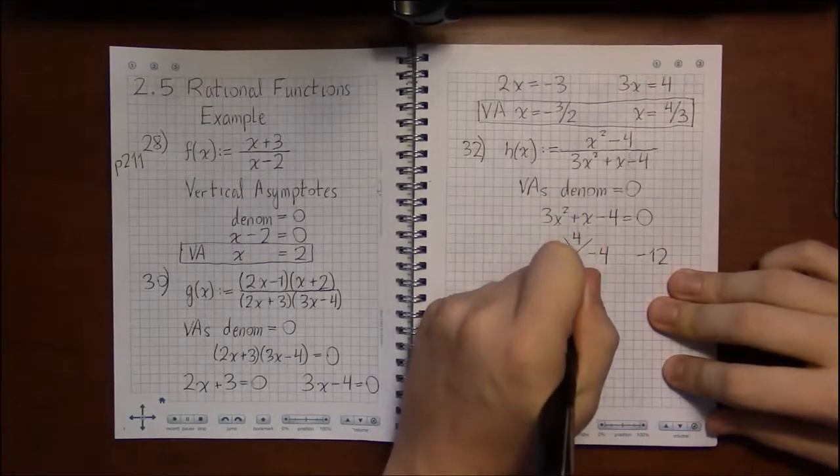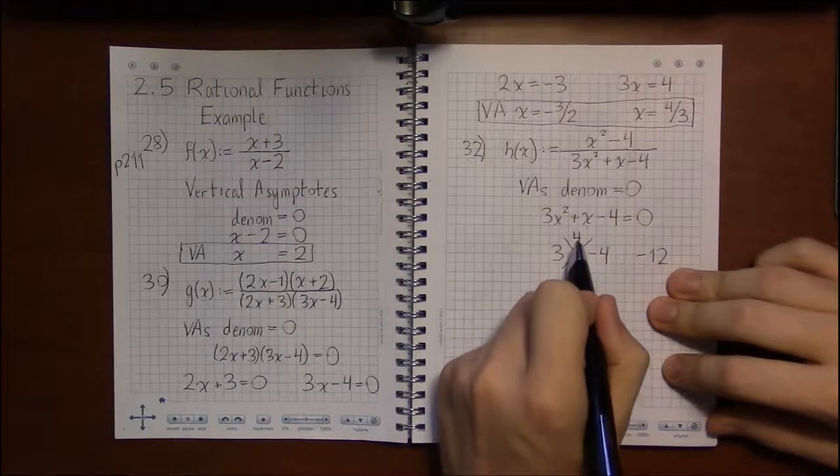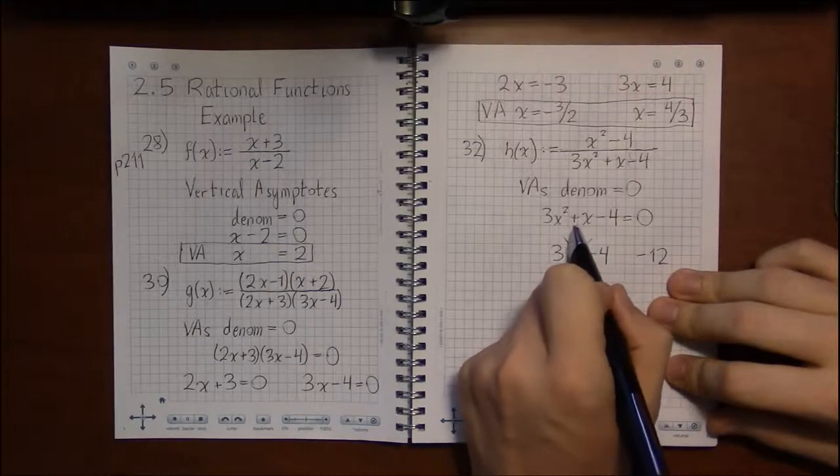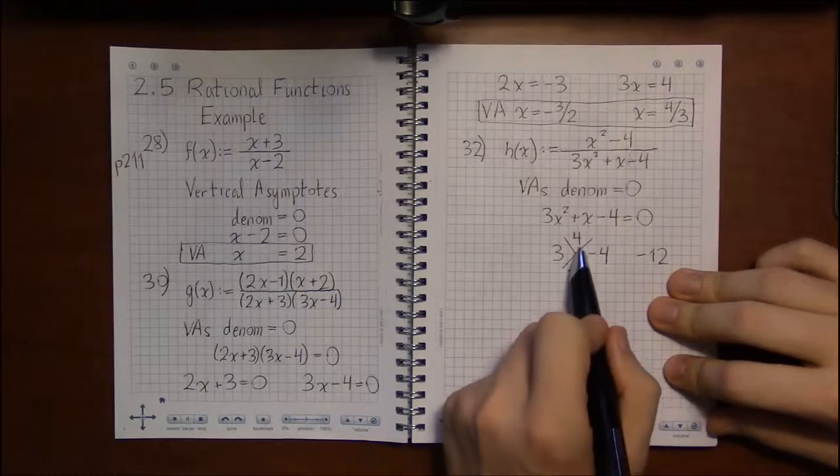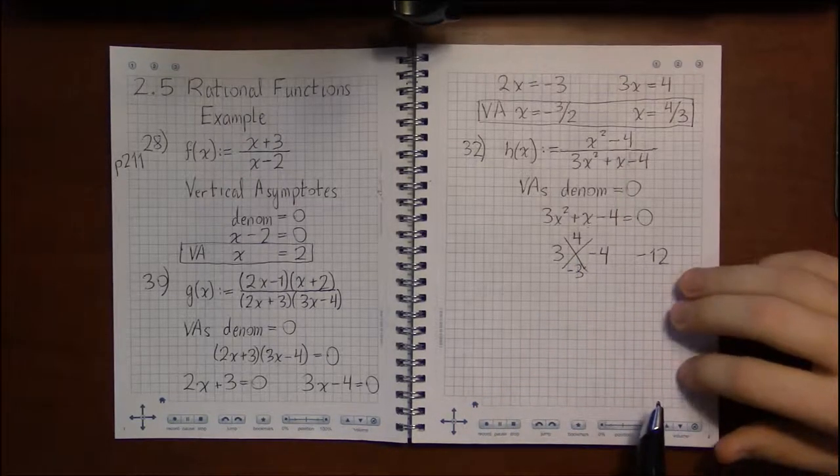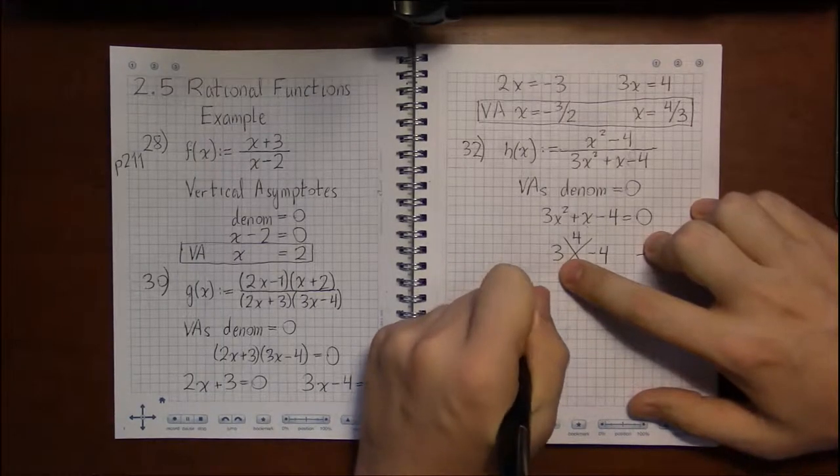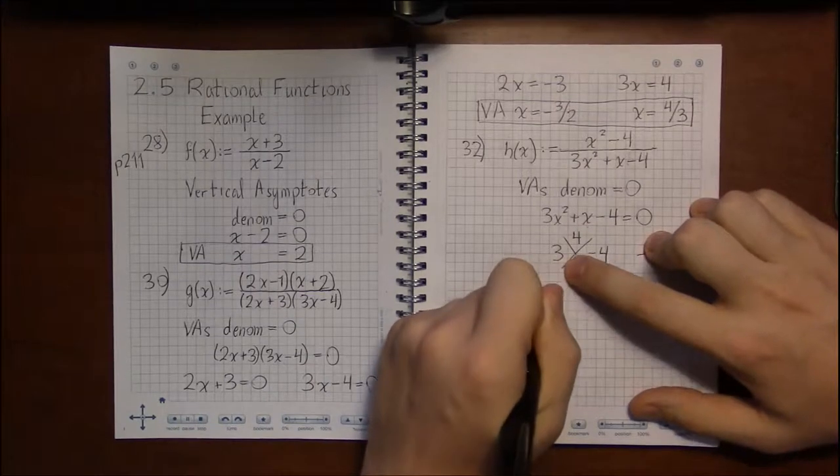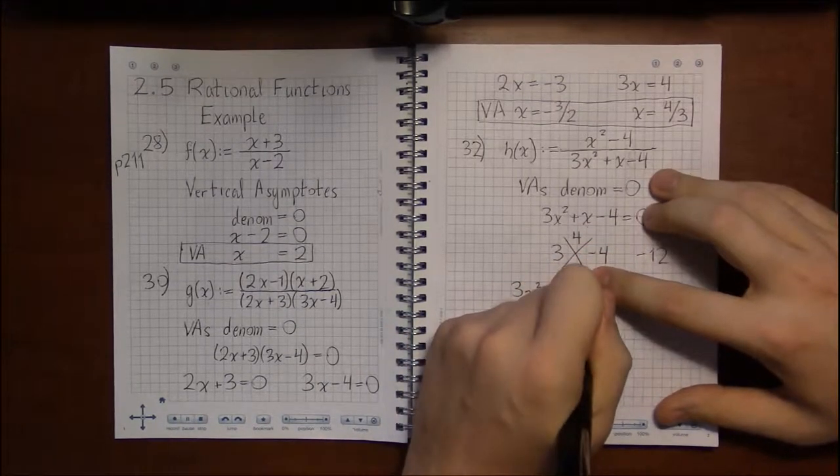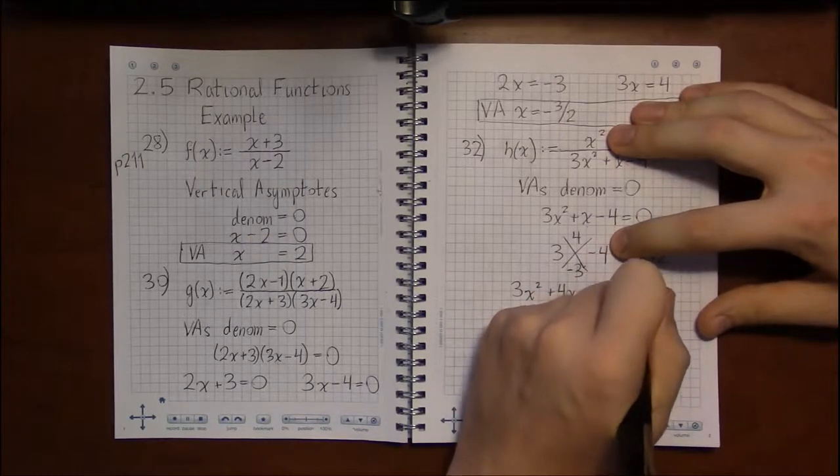How about a plus 4 and a minus 3? Because when I add those up, that'll give me a plus 1, which is what I need for the coefficient of x. And when I multiply them together, they are two factors of minus 12. So I'm going to write it out as 3x squared plus 4x minus 3x and then minus 4.